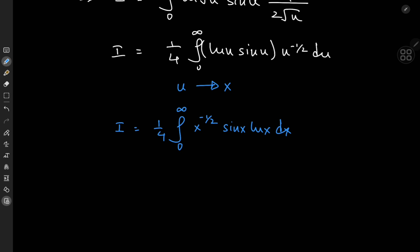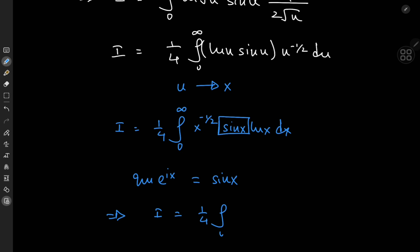Now I'd like to introduce a bit of complex analysis, because why not — we have the sine function. We know from Euler's wonderful formula that the imaginary part of e^(ix) is sin(x). So this implies that I equals a quarter of the imaginary part of the integral from zero to infinity of x^(−1/2)·e^(ix)·log(x) dx.